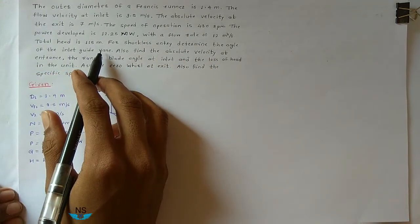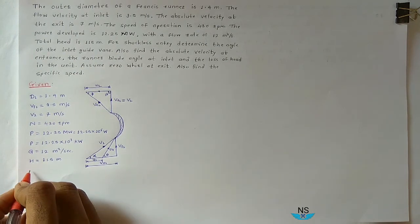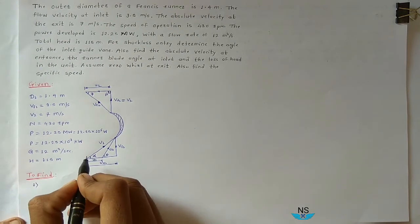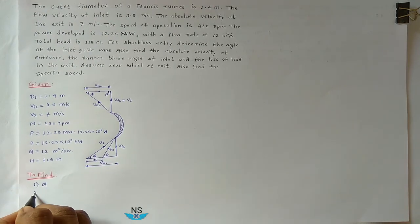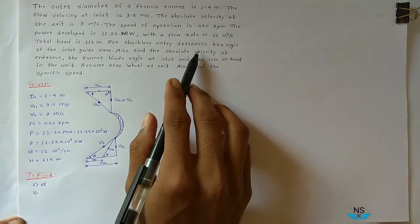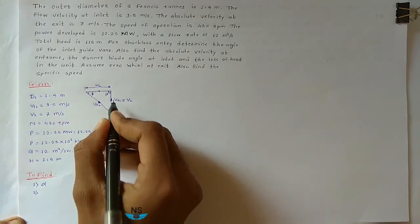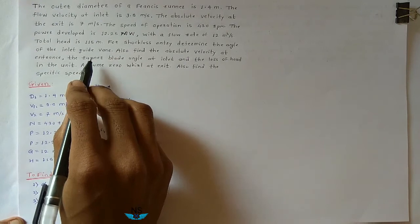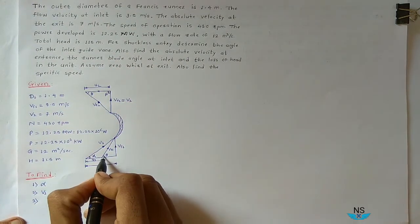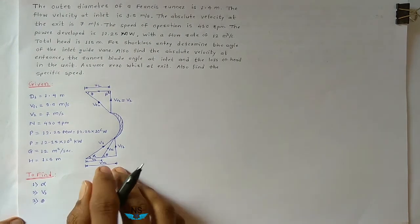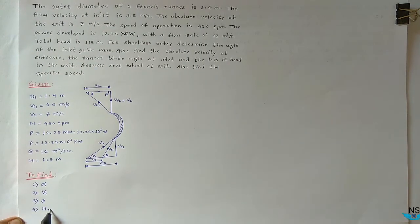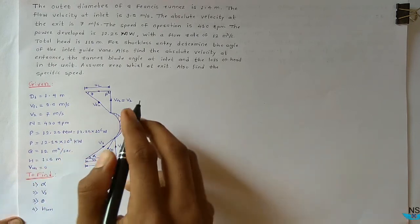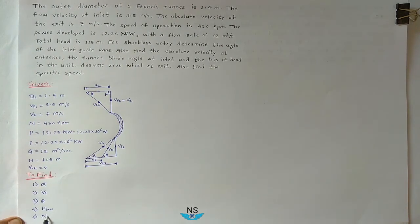We have to find: First, the Guide Vane Angle at Inlet (Alpha). Second, the Absolute Velocity at Entrance (V1). Third, the Runner Blade Angle at Inlet (Theta). Fourth, the Loss of Head in the Unit (H_loss). Assume Vw2 equal to zero — Zero Whirl at Exit. Fifth, the Specific Speed (Ns).